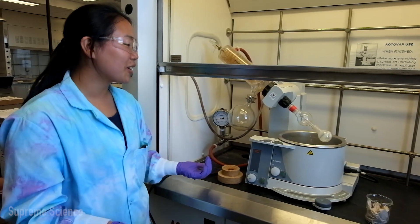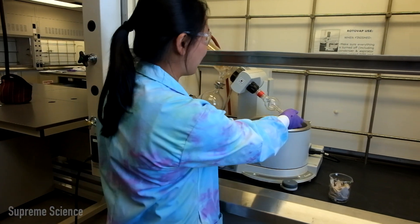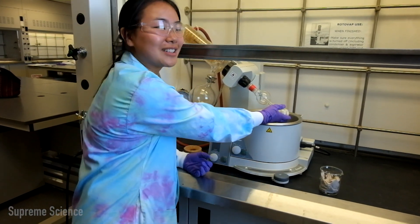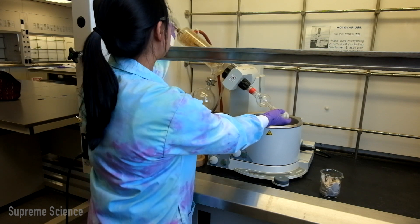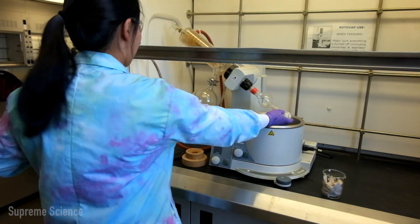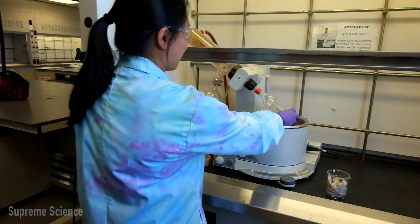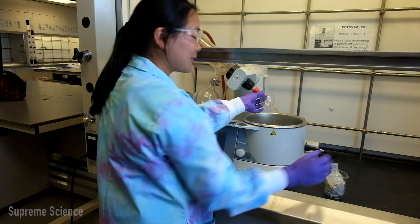So now that we have our product, we can remove the round bottom flask from the rotovap. So you want to hold this because you don't want it to fall. And release the stopcock and shut your vacuum off. And you can remove your round bottom flask and put it in a beaker.